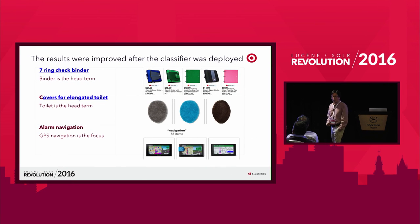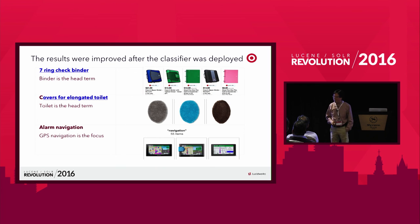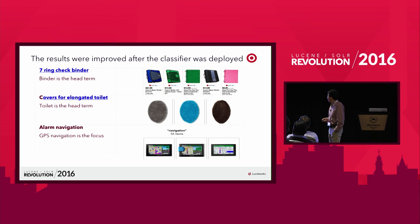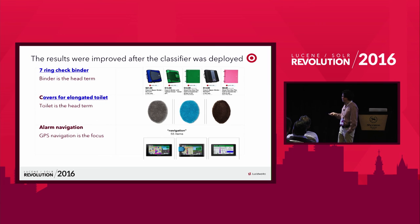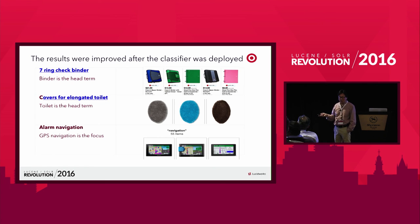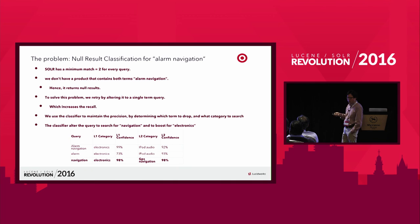After we built the classifier, we worked on this for about 6 months, and when we saw the results we were very happy. For 'seven-ring check binder,' we're pushing the rings to the bottom. For 'covers for elongated toilet' — holy smoke! — we now have toilet seat covers, which were buried in the middle somewhere before, but the classifier helped tell the Solr engine to pull those items to the top. And for 'alarm navigation,' the result looks good. This last slide explains in about five minutes how we solved the recall problem using the classifier as well.